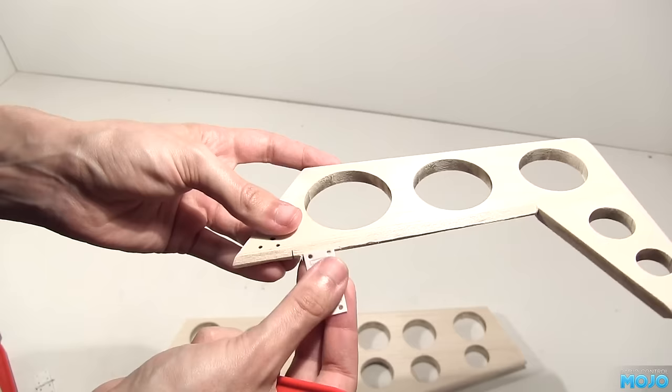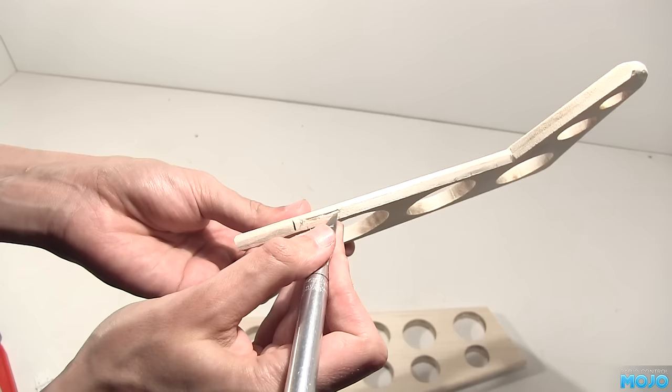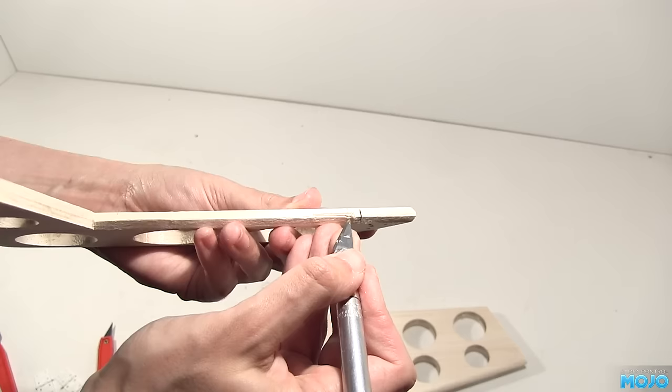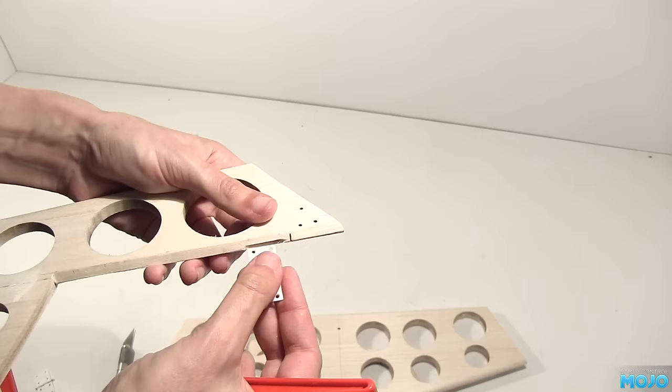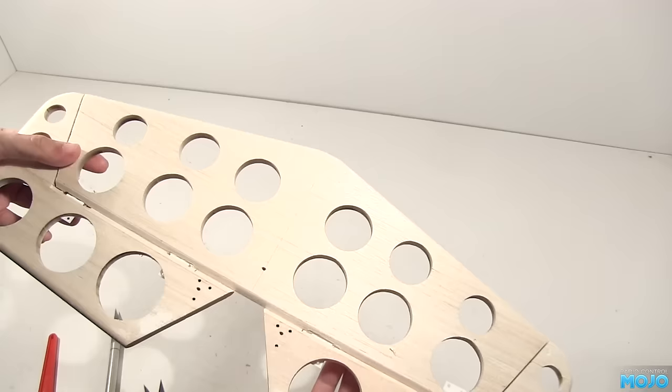One more thing though, the hinge has a bulge in the middle, so we need to trim a little balsa out for clearance. Just a sliver from the top and bottom edge. Then when the hinge goes back in, the hinge line can sit neatly at the peak of the bevel. There we go then, one hinged tailplane.